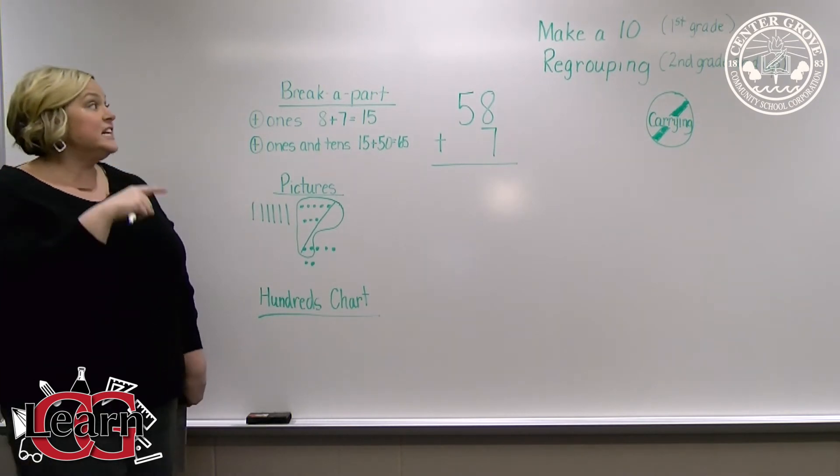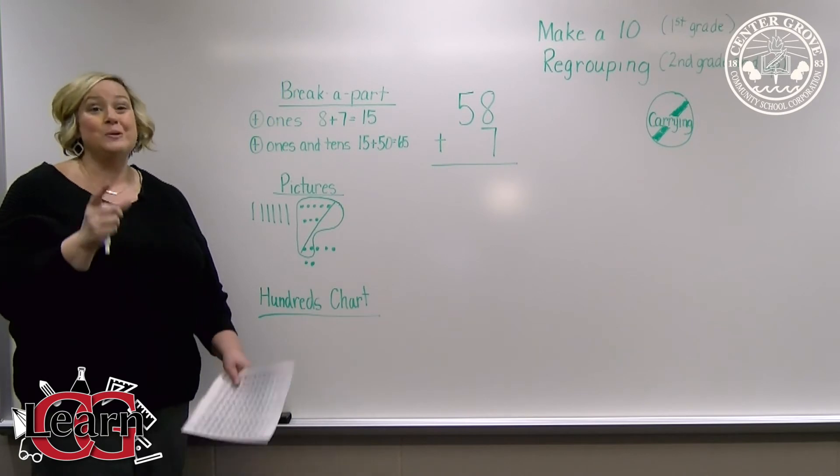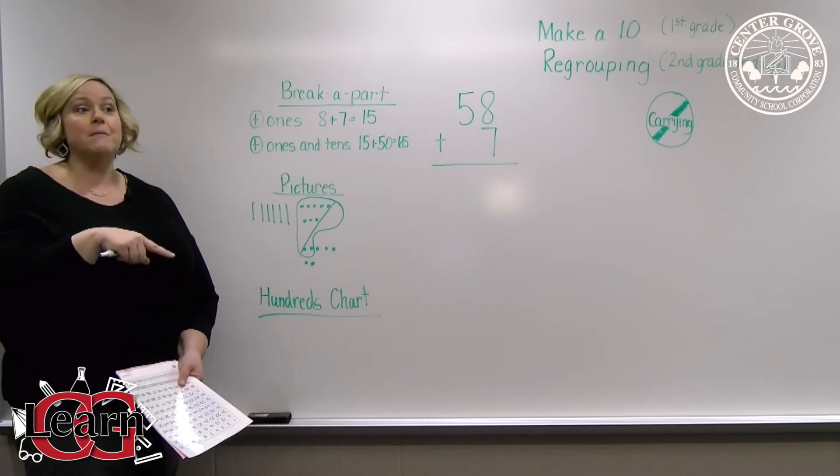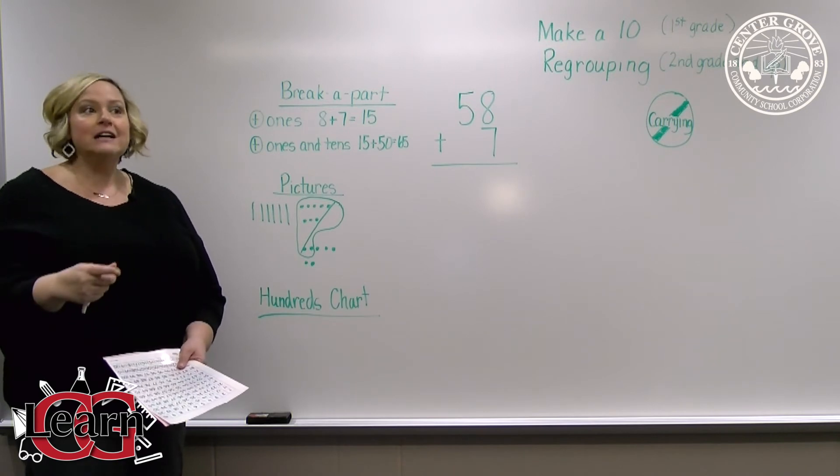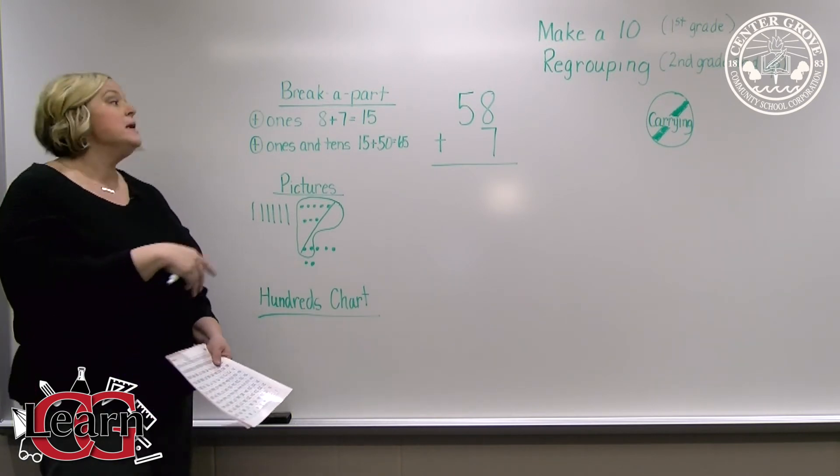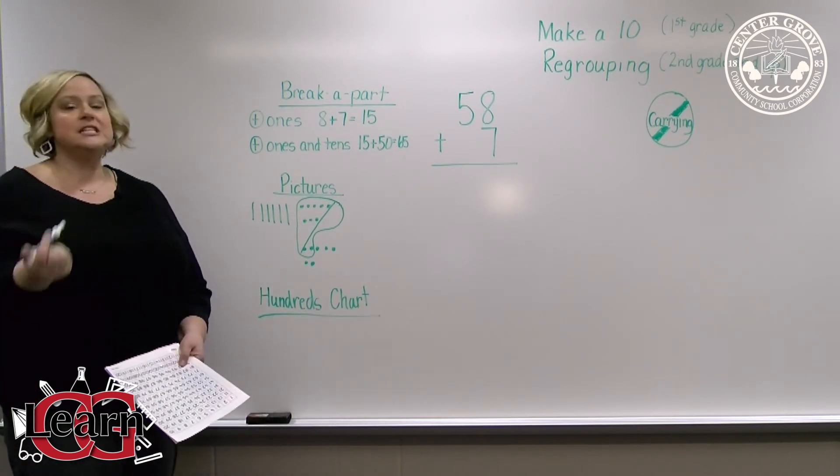They can circle 10 ones and there's a magic button down at the bottom that they can hit. And the iPad app automatically makes that group of 10 for them and they can see that their answer is 65.